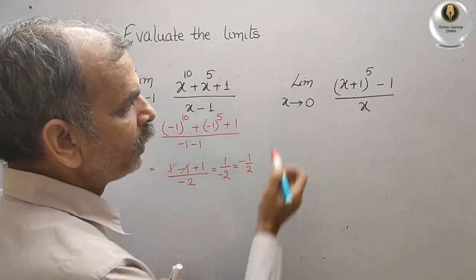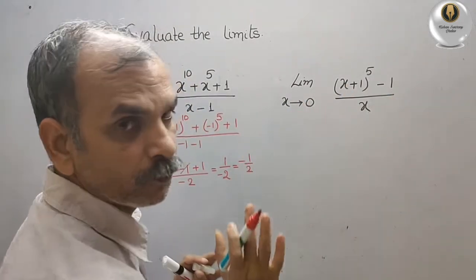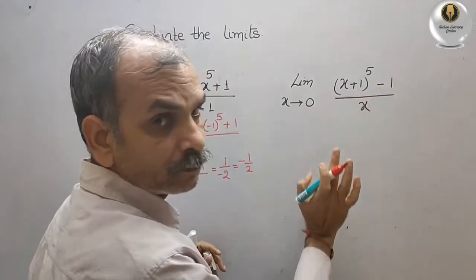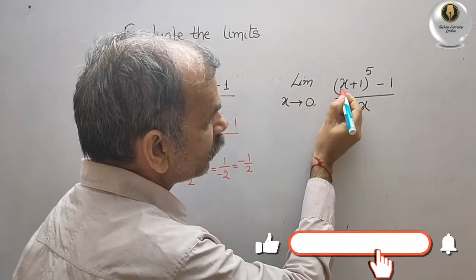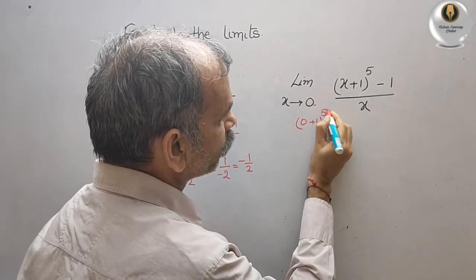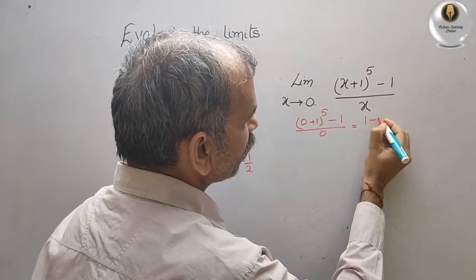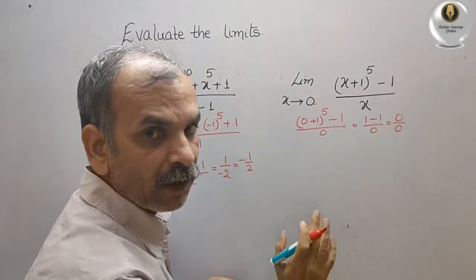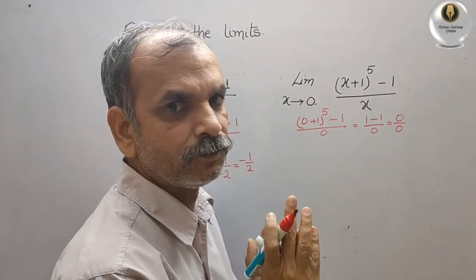Next problem: limit as x tends to 0 of (x plus 1) to the power of 5 minus 1, divided by x. We put x equals 0: we get (0 plus 1) to the power of 5, which is 1 to the power of 5, minus 1, divided by 0. That gives 0 by 0, which is indeterminate.